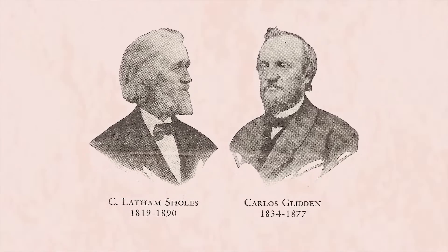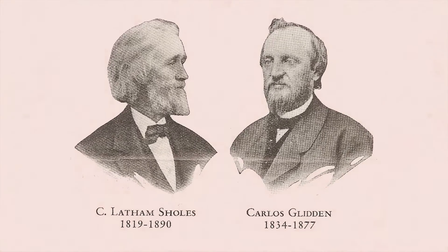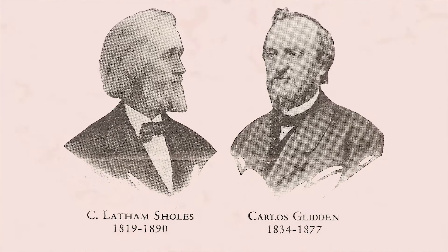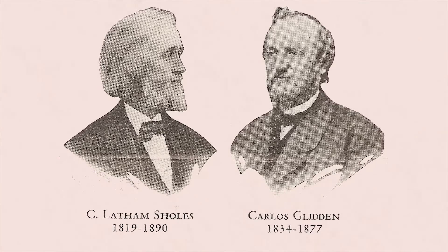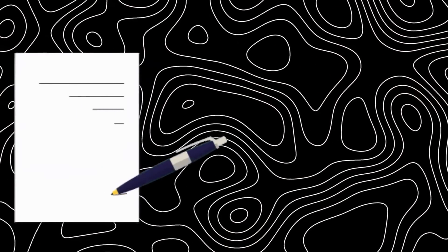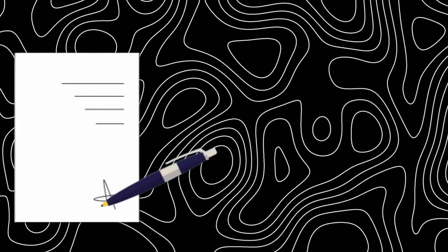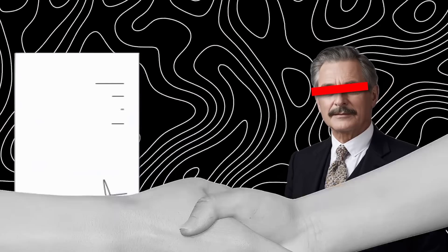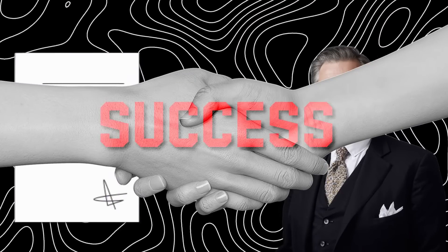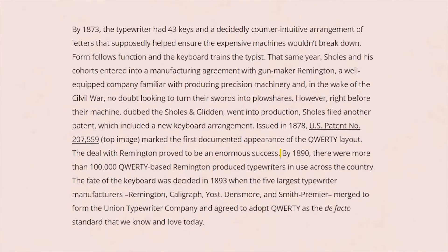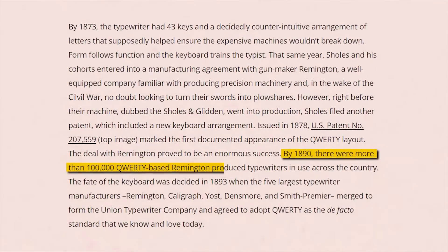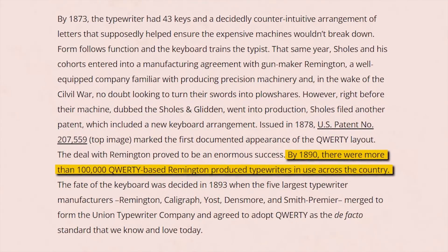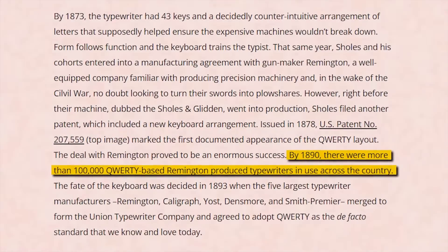Right after Scholes and his partner Carlos Glidden patented the QWERTY design and decided to start production, they entered a manufacturing agreement with the gunmaker Remington. This deal was a major success, and by 1890, 100,000 QWERTY keyboards were in use across the United States.